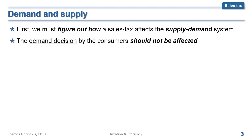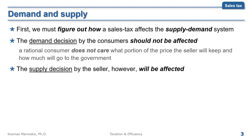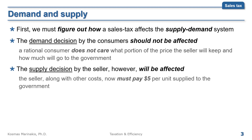The demand decision by the consumers doesn't seem to have any reason to be affected. A rational consumer cares about how much he or she has to take out of pocket to take the product home, not what portion of the money the seller will keep and how much will go to the government. On the other hand, the supply decision by the seller should be affected, because the seller, along with his other costs of production, now must pay a $5 tax to the government for each unit sold.